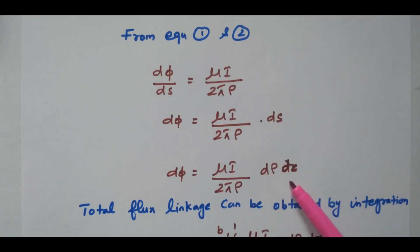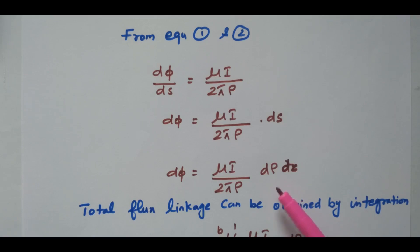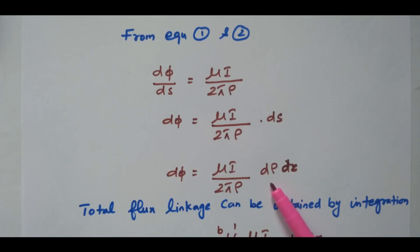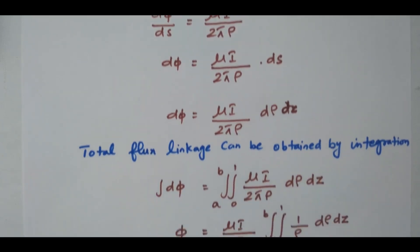The dS is dρ·dZ — that is radius times height. The ρ refers to the radius and Z refers to the height. We consider 1 meter length of cable with radius ρ. This is the flux due to a small segment at ρ. To find the total flux, the total flux linkage can be obtained by integration on both sides.